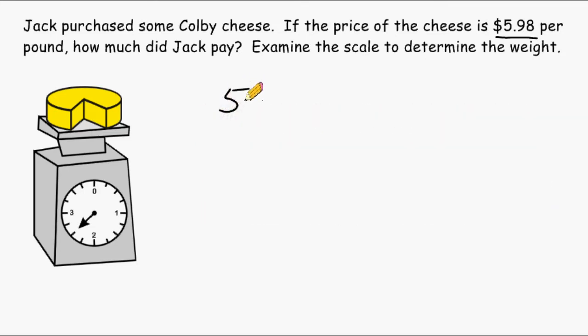So if he purchased two pounds, we would multiply $5.98 by two, or if he purchased three pounds, we would multiply by three, and so on.